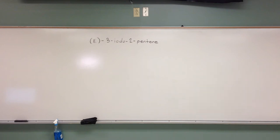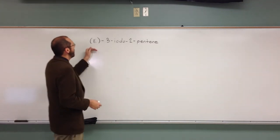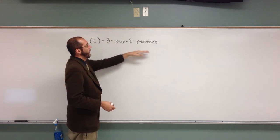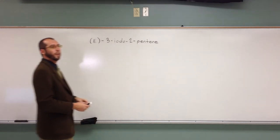Let's try this one. This one is where we're taking a name and actually drawing a structure. So, E3-Iodo-2-pentene. What is the first thing that you would do?